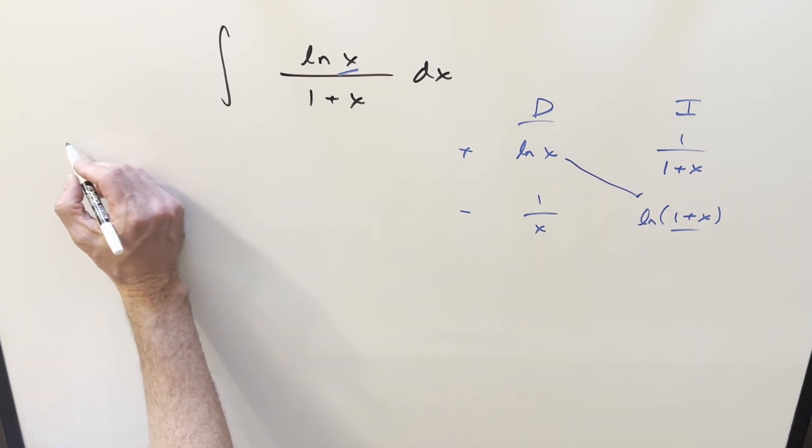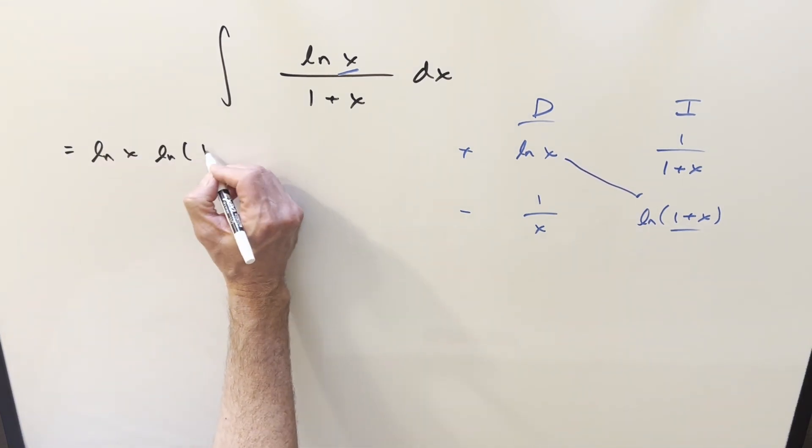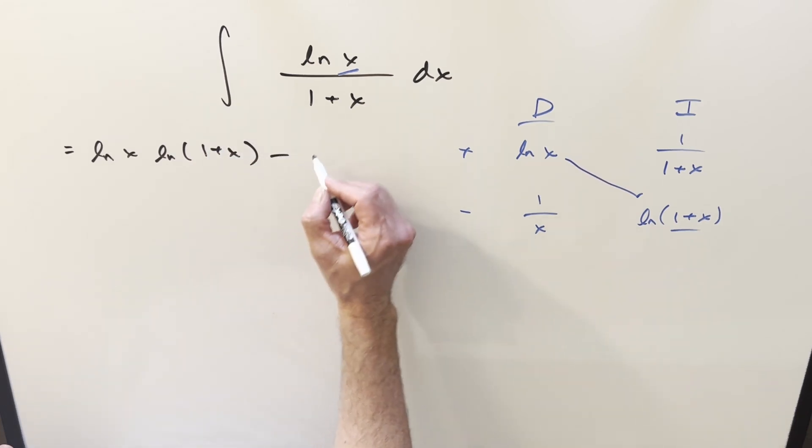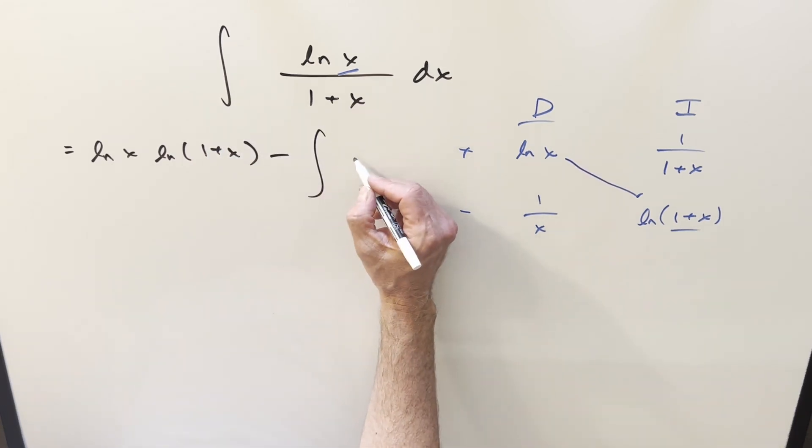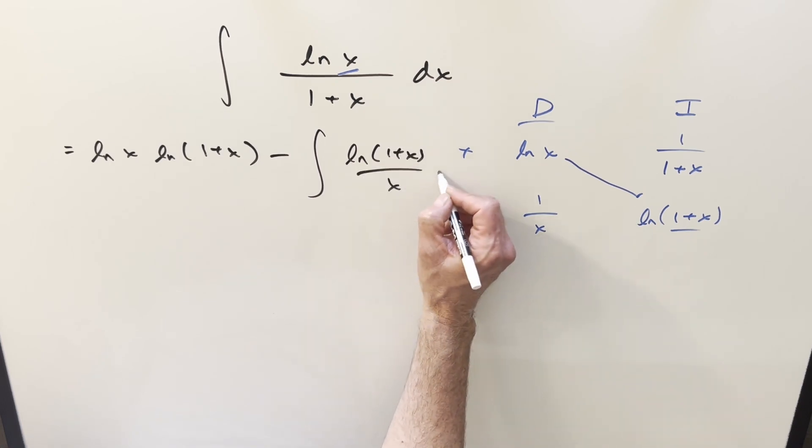We'll take part of the solution here on the diagonals, and what we're going to get is natural log of x times natural log of 1 plus x, and then we're going to have an integral, similar, pretty similar to what we have here, just kind of switching it up a little bit, we're going to have this thing.